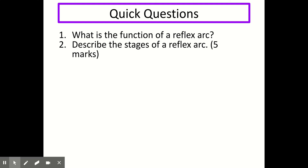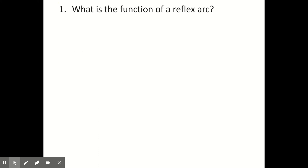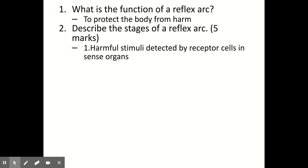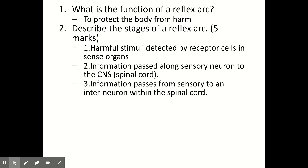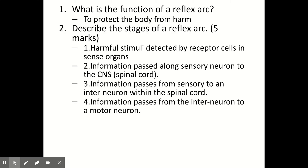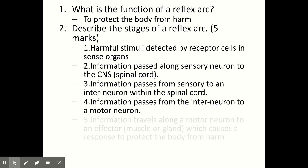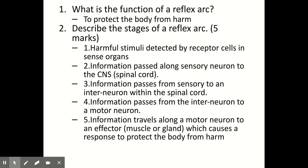Let's try some final quick questions about reflex arcs. The function of a reflex arc is to protect the body from harm. Describing the stages: first, harmful stimuli are detected by receptor cells within the sense organs. The information is then passed along the sensory neuron to the CNS. It passes from the sensory to the interneuron within the spinal cord, then from the interneuron to the motor neuron, and finally the information travels along the motor neuron to an effector — a muscle or gland — which causes a response that protects the body from harm.